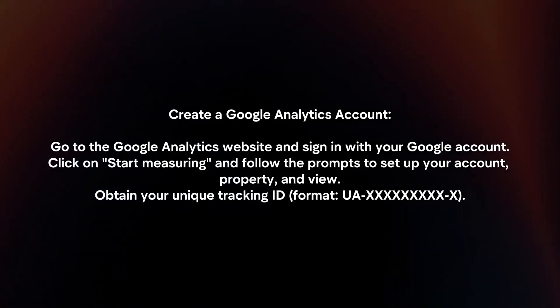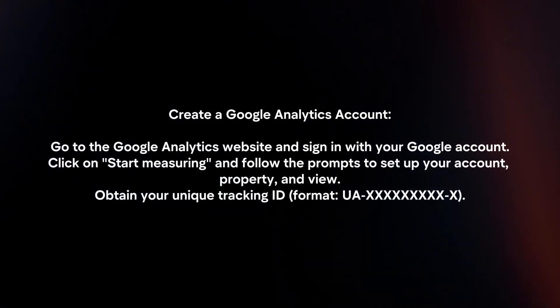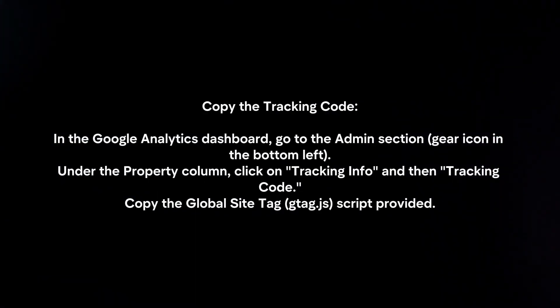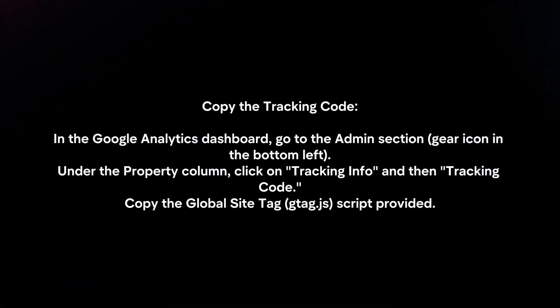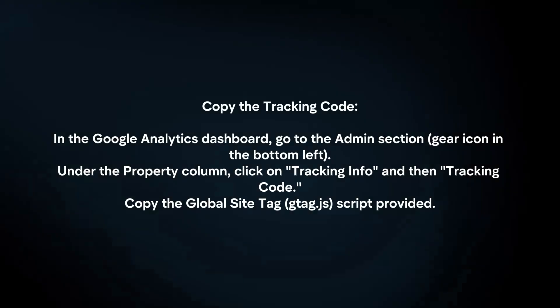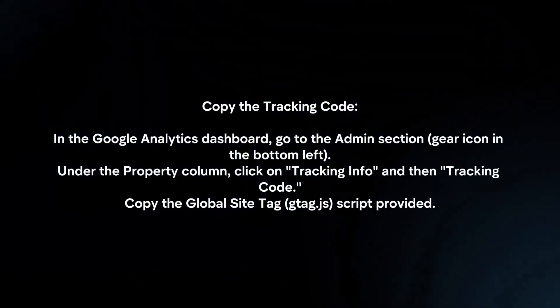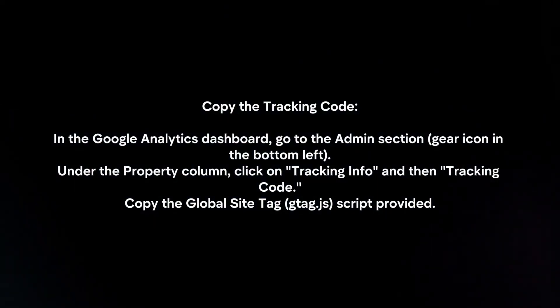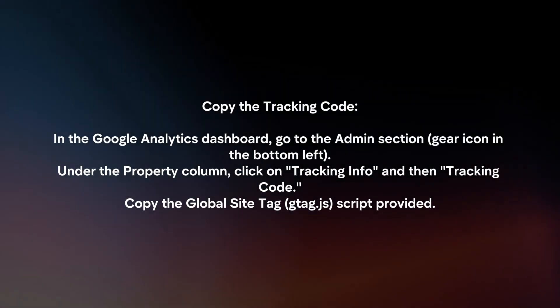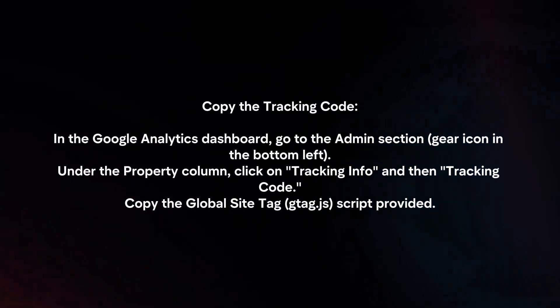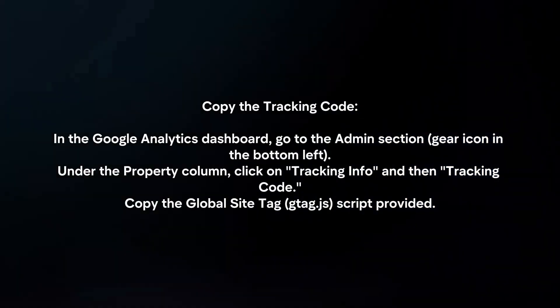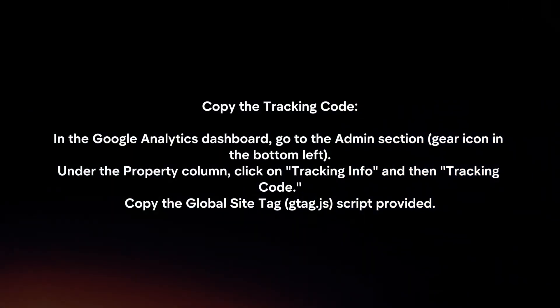Obtain your unique tracking ID and copy the tracking code. In the Google Analytics dashboard, go to the Admin section. Under the Property column, click on Tracking Info and then Tracking Code. Copy the global site tag script provided.